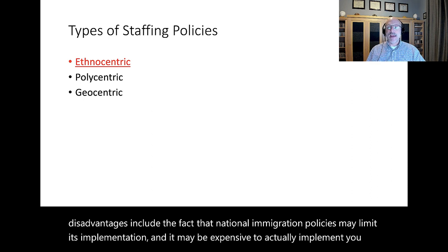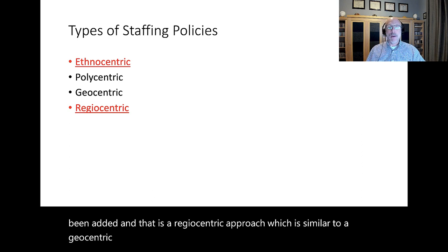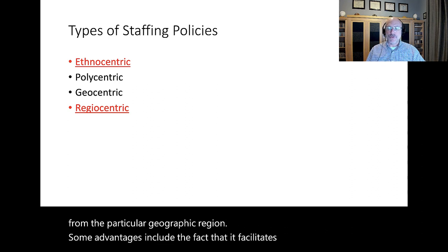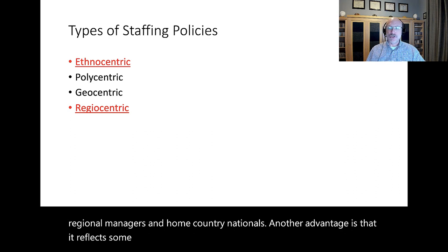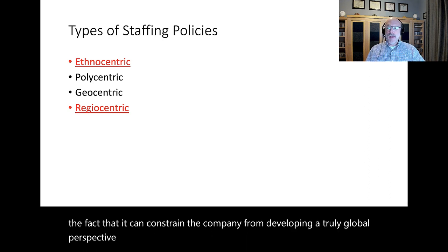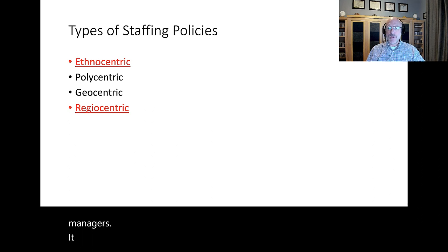Recently, a fourth staffing policy has been added — the regiocentric approach, which is similar to a geocentric approach in that managers are selected from a wider pool, but only from a particular geographic region. Advantages include that it facilitates interaction between regional managers and home country nationals and reflects some sensitivity to local conditions. Disadvantages include that it can constrain the company from developing a truly global perspective by facilitating a sort of federalism for regional headquarters, and although it improves career prospects for managers, it does constrain them to the regional level.